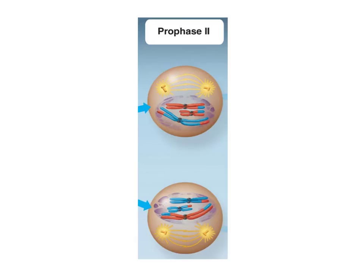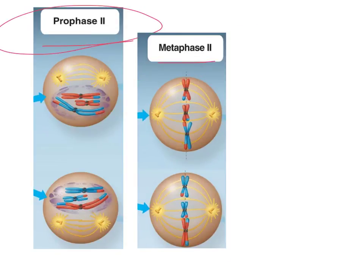Meiosis II is going to be very similar to mitosis. In prophase II, same thing is happening as in mitosis — we're getting rid of the nucleus and forming the spindle fibers. Prophase II is followed by metaphase II, where chromosomes line up in the middle along the metaphase plate, getting ready to be separated. Proteins are attaching to the centromeres to be able to pull these sister chromatids apart.